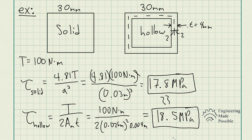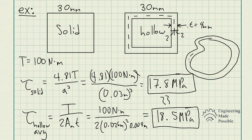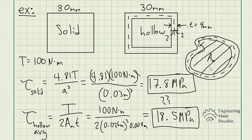One important thing to note: this average shear stress equation doesn't only apply to well-known geometric shapes like circles or ovals. It can apply to any shape of thin-walled shaft in torsion, which makes it much more broadly useful.